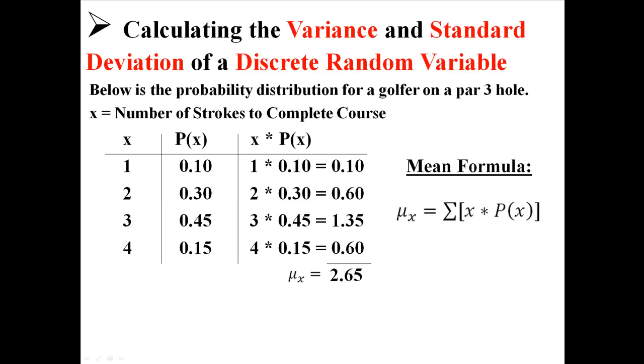First of all, in my last lecture I explained how to find the mean, and now we're going to need to find the mean before we find the variance. In my example, I had a distribution for a golfer on a par 3 hole.